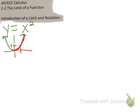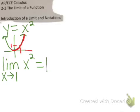The notation for that is: the limit as x → 1 of x squared equals 1. The answer is 1 because from both the left side and the right side, that's what the y value is approaching.